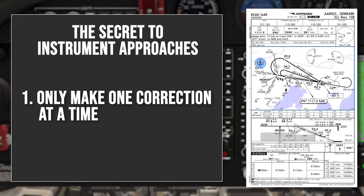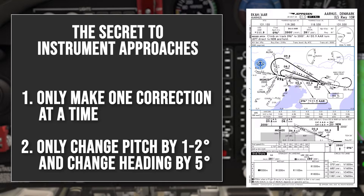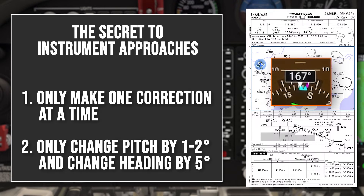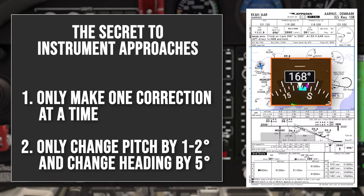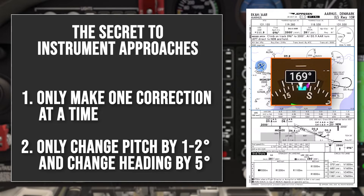Secondly, the corrections that you do make must be very, very small. You only ever want to change your pitch attitude by 1 or 2 degrees at a time, and you only ever want to change your heading by a maximum of 5 degrees. The heading bug makes your life quite easy here, because the heading bug is 10 degrees wide, which means the edge of the heading bug is 5 degrees left or right of where you've set it. So when you want to turn left or right to make a correction to the localizer, you can simply turn onto the edge of the heading bug and you'll be flying a nice, gentle 5 degree correction.